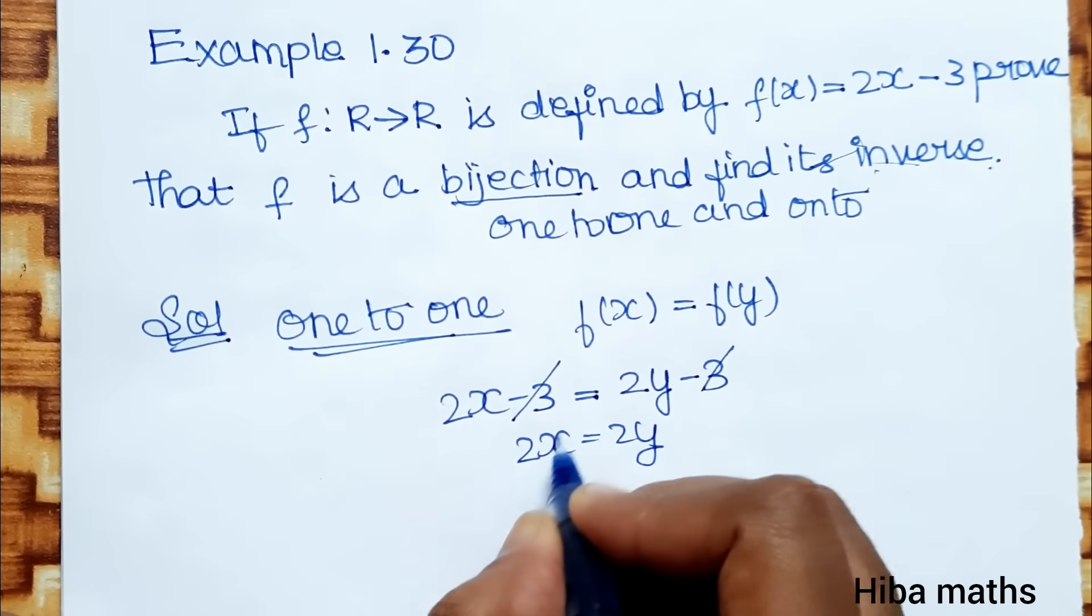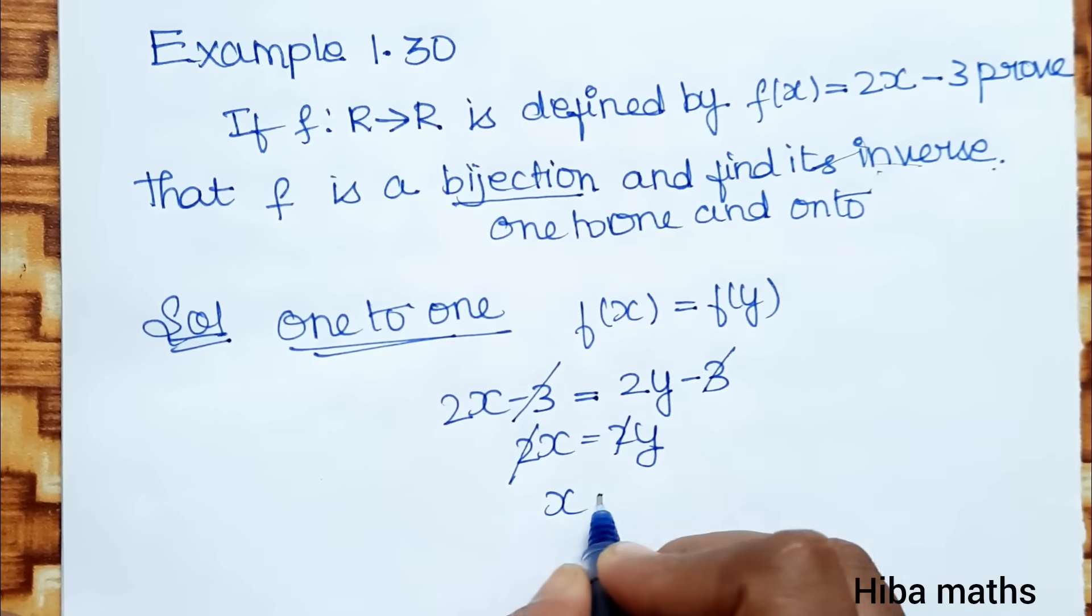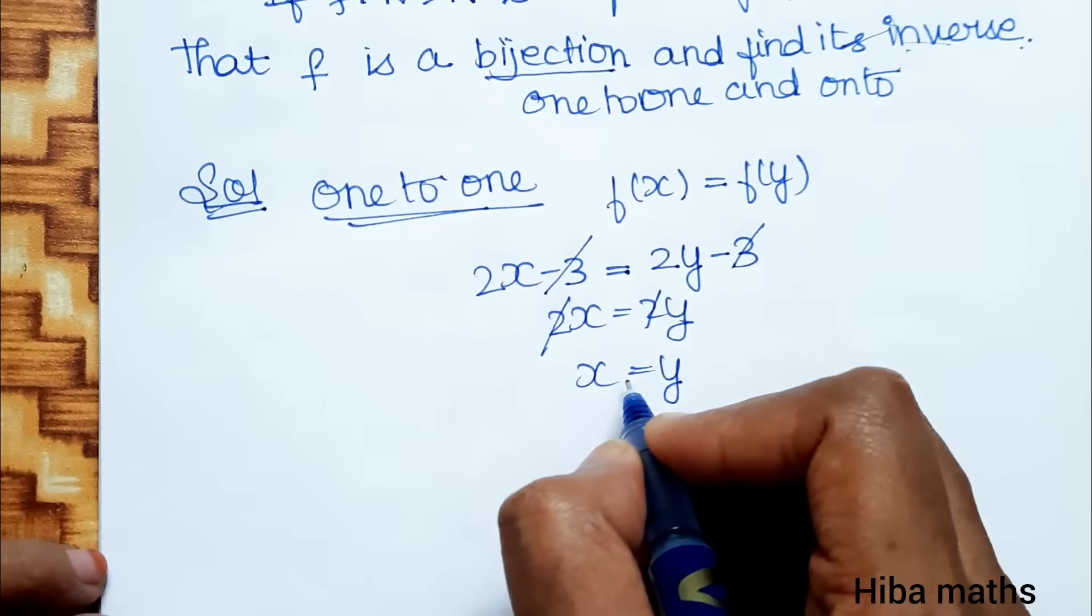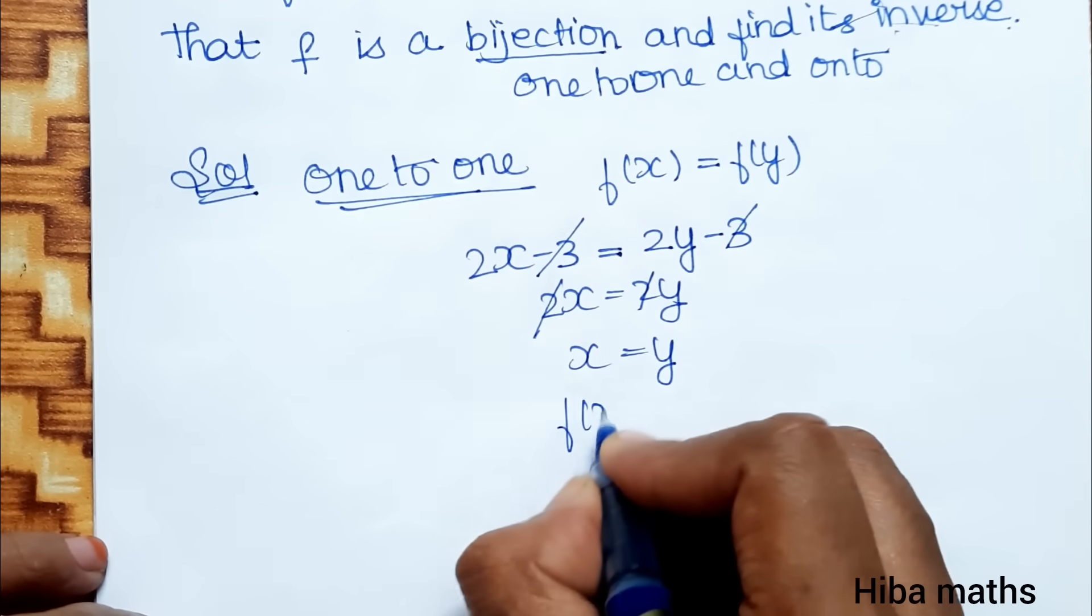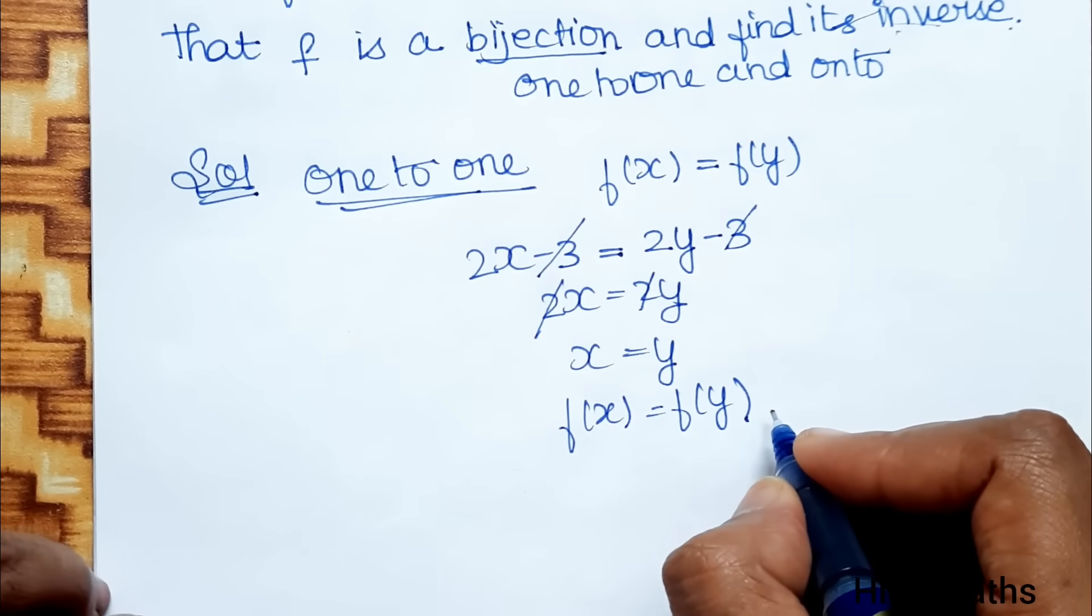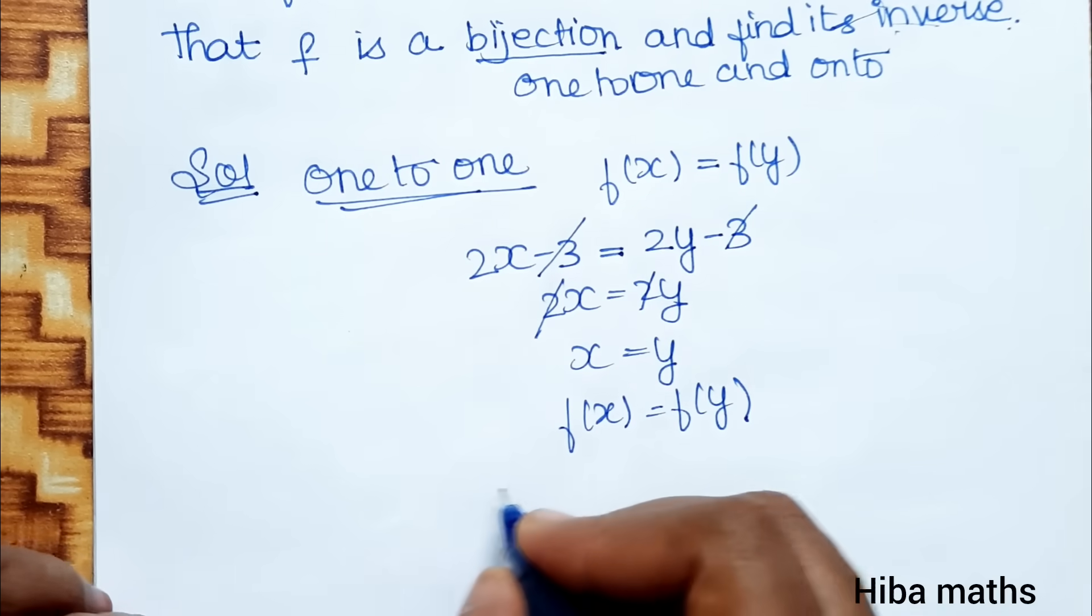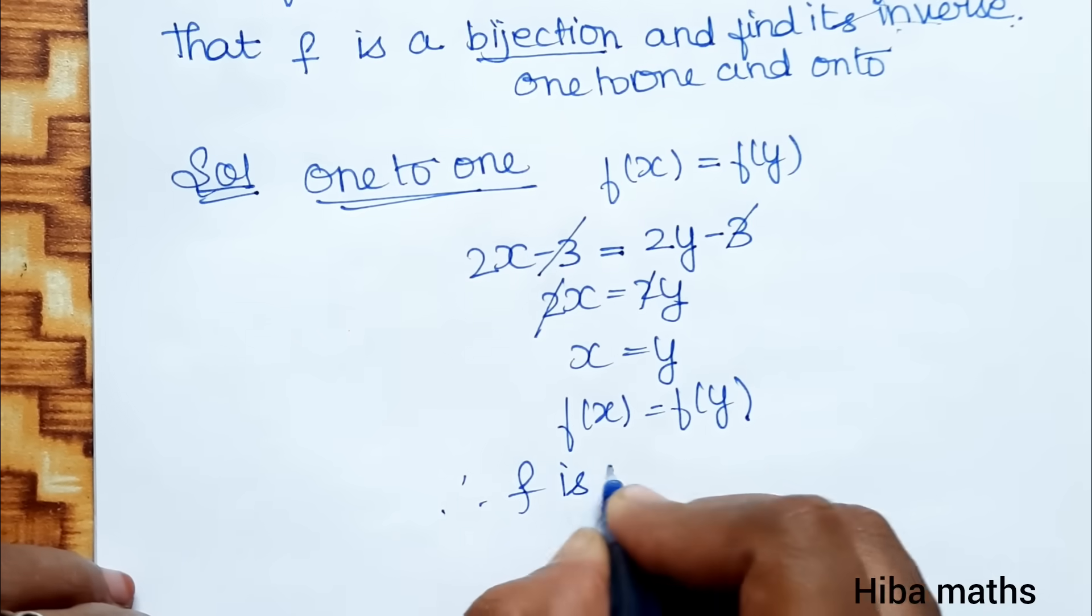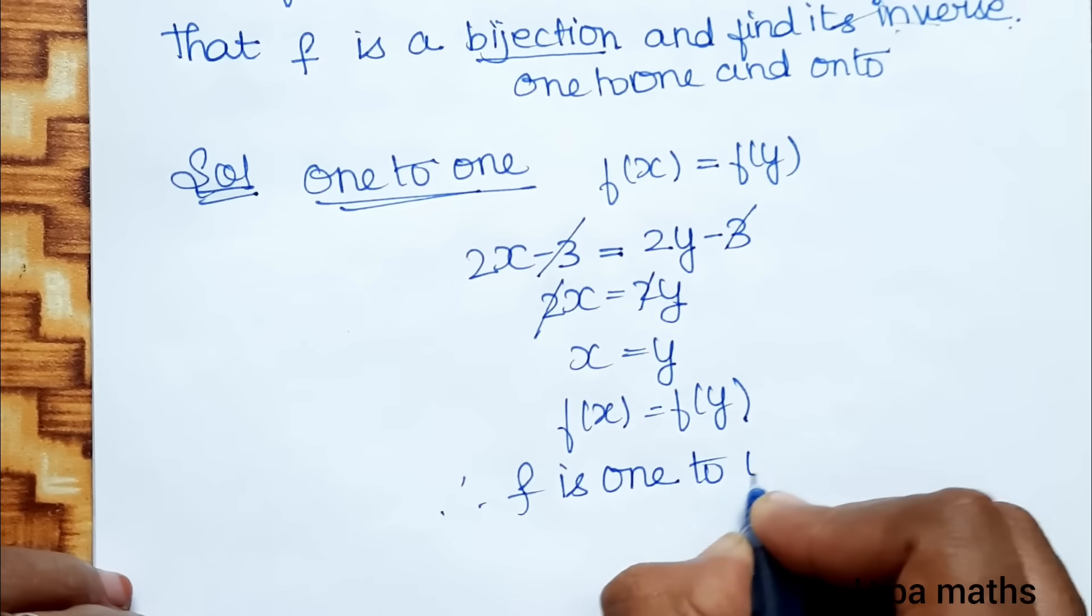2x = 2y. 2 cancels. x = y. So when f(x) = f(y), we get x = y. This is satisfied. Therefore, f is one-to-one.